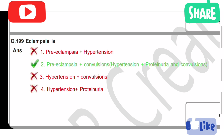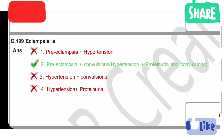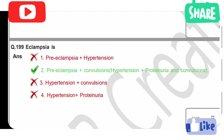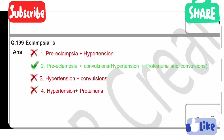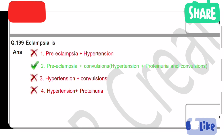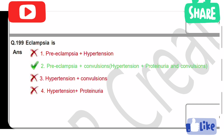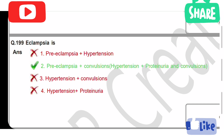Eclampsia is — Option 1: Preeclampsia plus hypertension. Option 2: Preeclampsia plus convulsions. Option 3: Hypertension plus convulsions. Option 4: Hypertension plus proteinuria. Option 2 is the correct answer — preeclampsia plus convulsions.